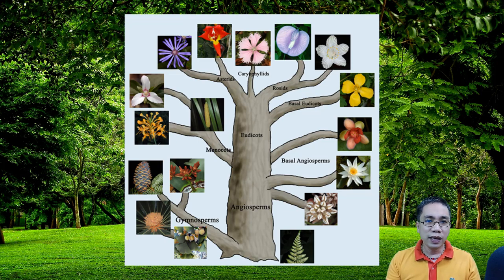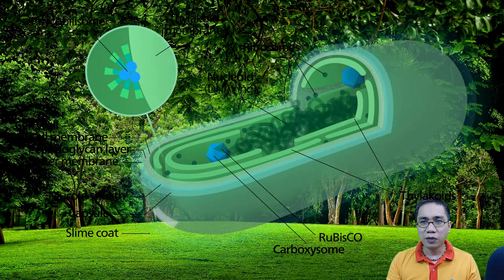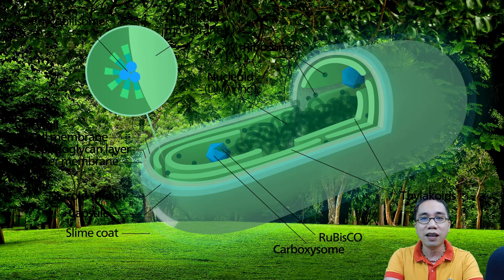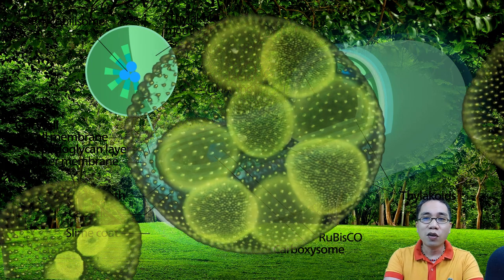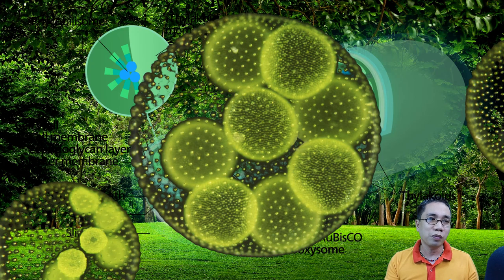So, if we trace back the evolution of plants, we should start with your single-celled prokaryotes. And due to some kind of luck, the chloroplast and the mitochondria evolved. So, we now have the eukaryotes.